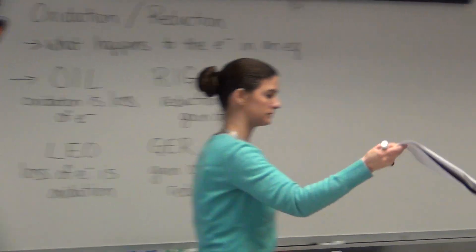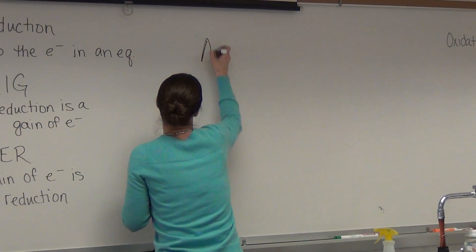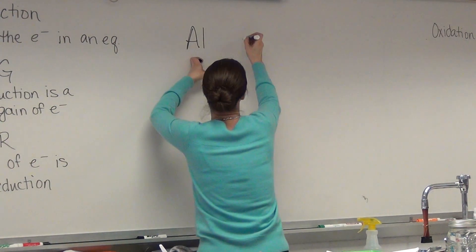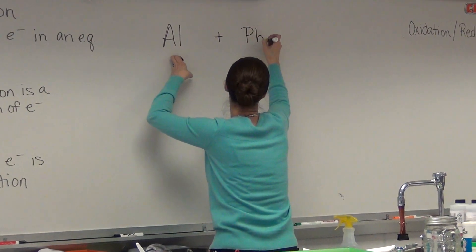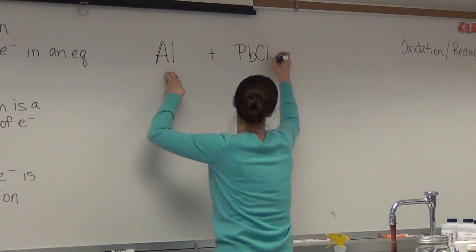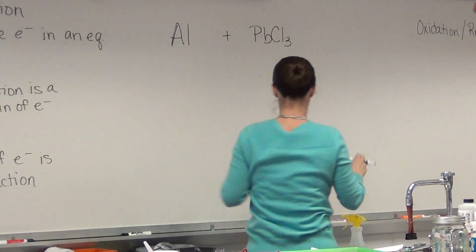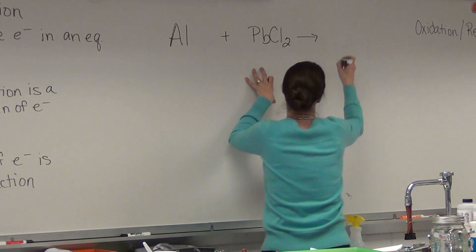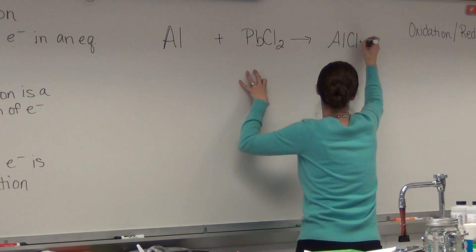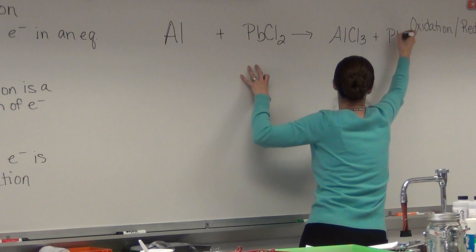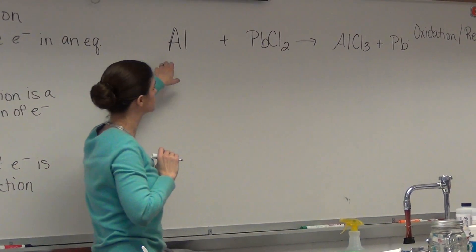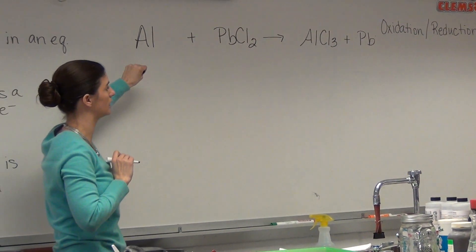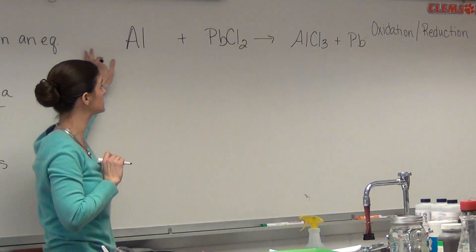I'm going to write a balanced equation for you. Here's our example: aluminum (Al) plus lead(II) chloride (PbCl₂) yields aluminum chloride (AlCl₃) plus lead (Pb). So this is our equation.